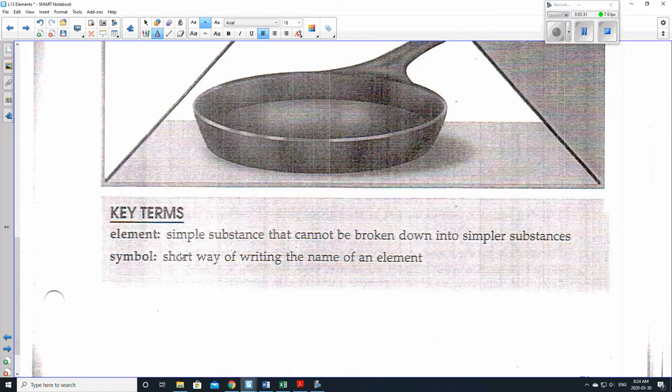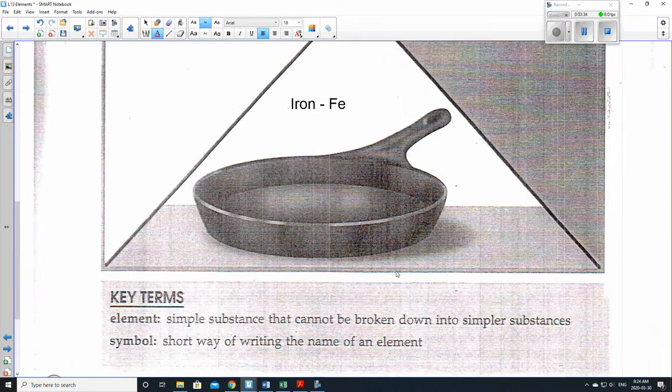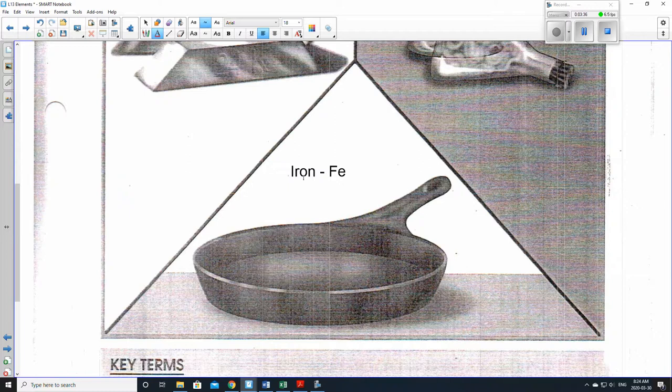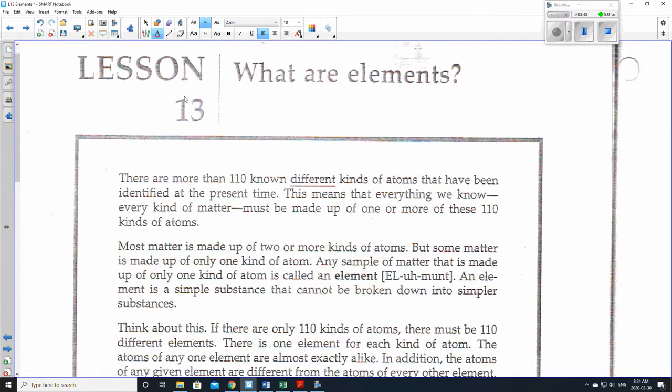A symbol is a short way of writing the name of an element. So this is the symbol for iron, but I say iron. But this is the chemical symbol right here. Let's go.